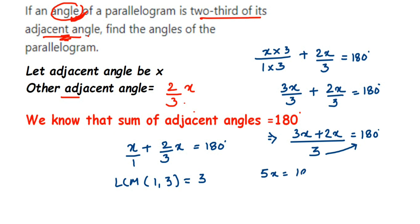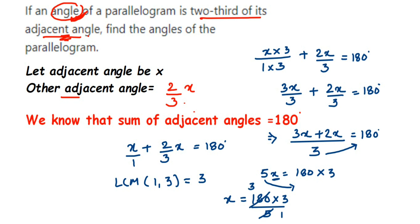To isolate x, we transpose 5 to the other side: x equals 180 multiplied by 3 divided by 5. Cancelling 5 and 180 — 180 divided by 5 is 36 — so x equals 36 multiplied by 3, which equals 108. The value of x is 108 degrees.